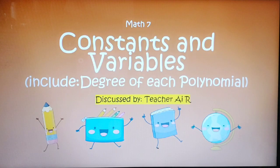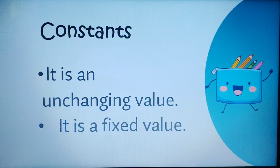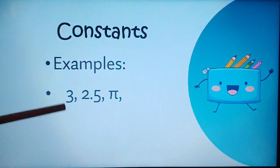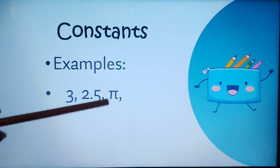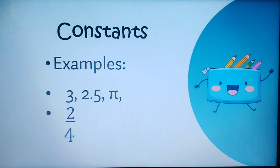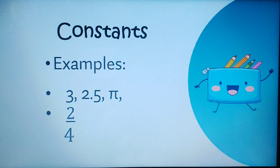Constants and variables. When we say constant, it is an unchanging value. It is a fixed value. We have examples such as 3, 2.5, and also fractions. It means, under constants, we have all the numbers given in the equation.